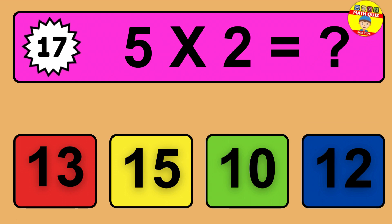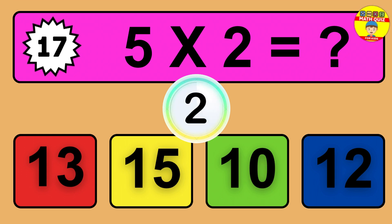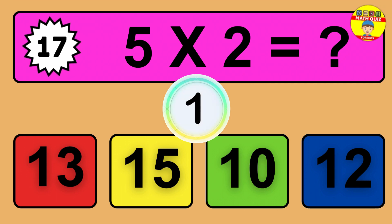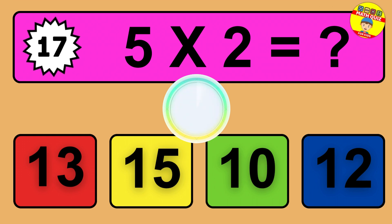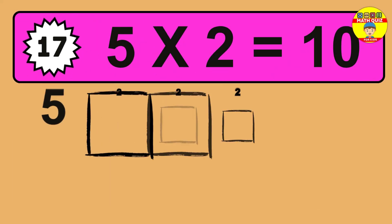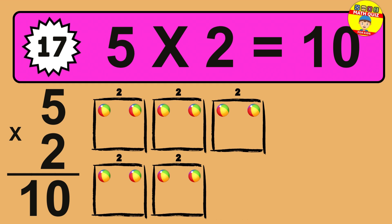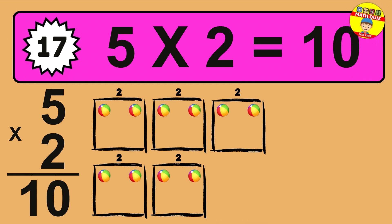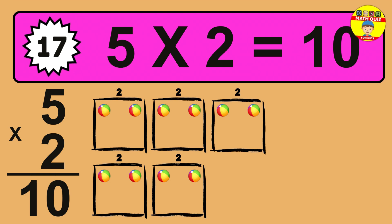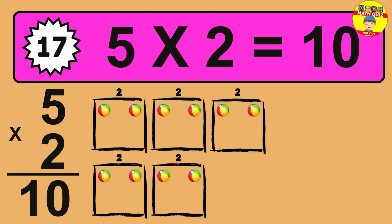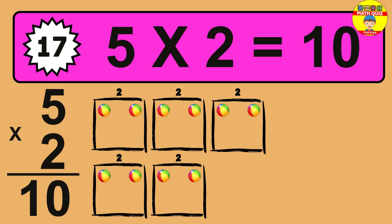The answer is 5 times 2 is 10. To calculate, we have 5 groups with 2 balls each one. So how many balls do we have? 10 balls.